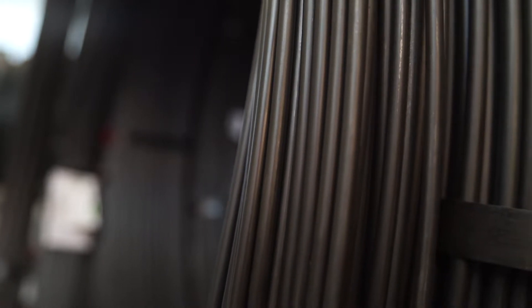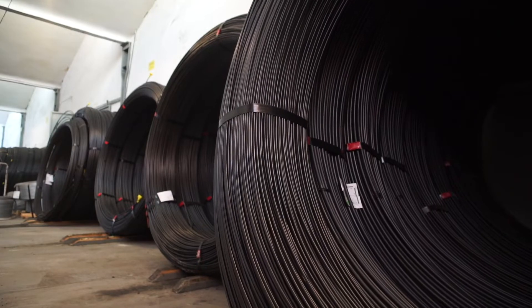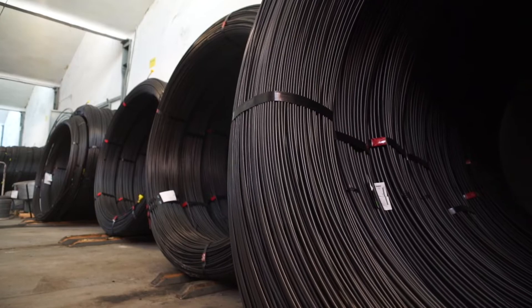The raw material which will be used to produce springs must have special properties. Suspension springs are made of chromium silicon wire with increased tensile strength. This is about 2000 MPa.